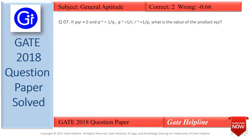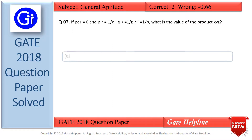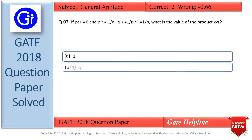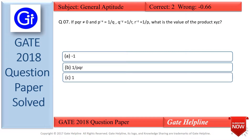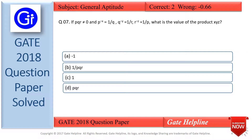Question number 7 is: if PQR is not equal to 0, and P raised to the power minus X equals 1 upon Q, Q raised to the power minus Y equals 1 upon R, and R raised to the power minus Z equals 1 upon P — what is the value of the product XYZ? The options are: A) minus 1, B) 1 upon PQR, C) 1, and D) PQR.